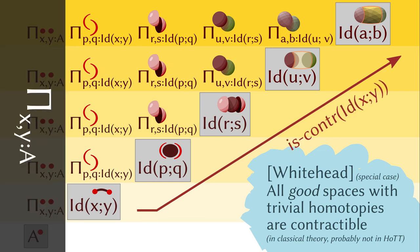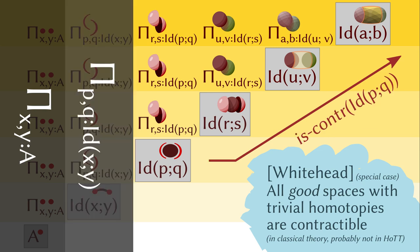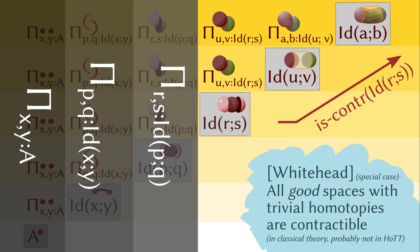Alright, what if we only have trivialities starting from the next dimension? Well, we can factor out the prefix and apply the same argument to the identification type from x to y. This means we can always summarize the trivialities starting from a certain dimension as contractibility. For example, triviality from dimension 1 is the contractibility of the identification type from p to q. Triviality from dimension 2 is the contractibility of the identification type from r to s, and so on.